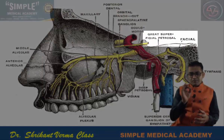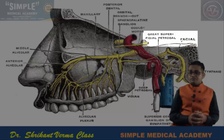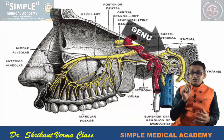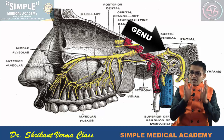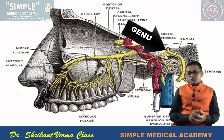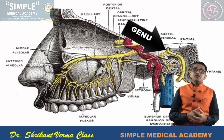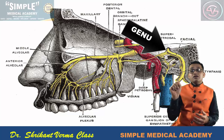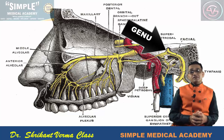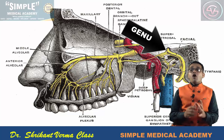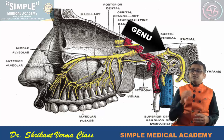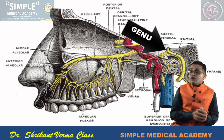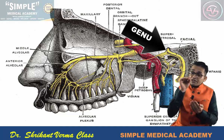The greater petrosal nerve is a branch of the facial nerve, emerging from the geniculum of the facial nerve. MCQ memory tip: G for geniculum, G for greater petrosal nerve. This greater superficial petrosal nerve then passes through the foramen lacerum from the posterior side to the anterior side.